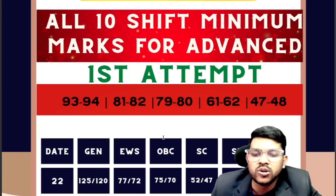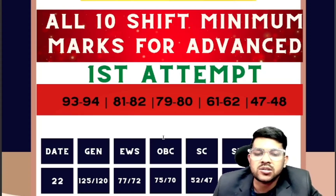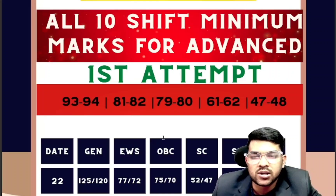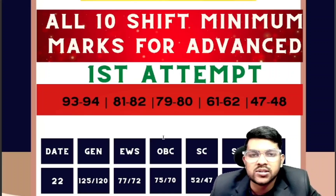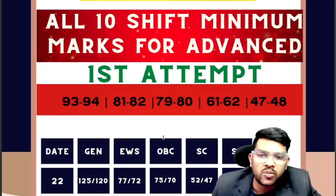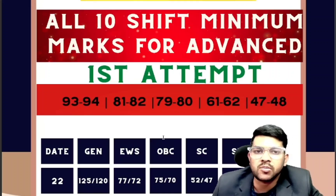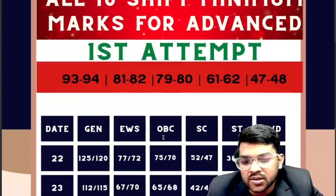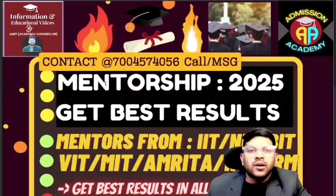For PWD, any marks — you just need to appear at the center. Even if you score zero, five, or ten marks, you are qualified for the exam.